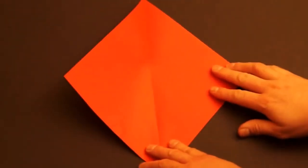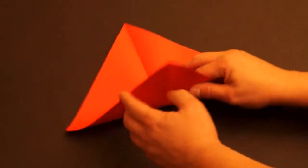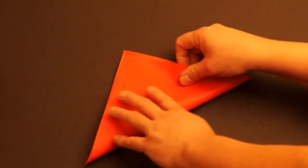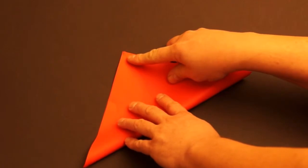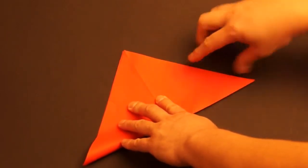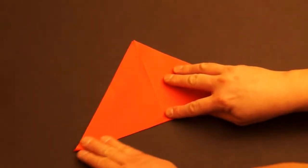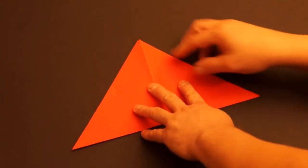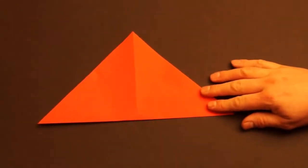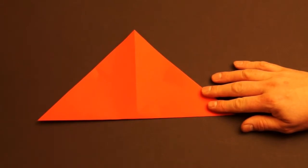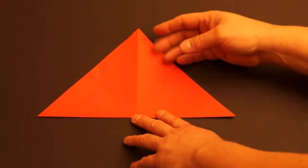Turn it so that the crease is vertical. Fold the bottom to the top again. Press down good on your fold. Open it up.